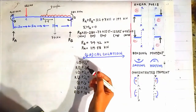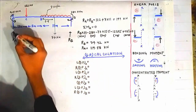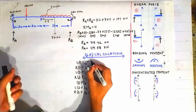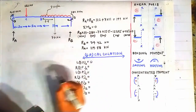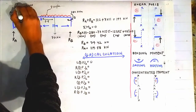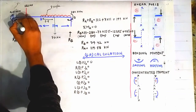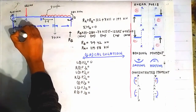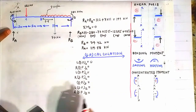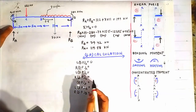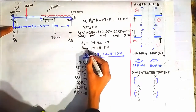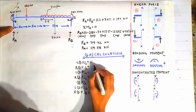Shear force on the left side of point A is zero because the beam terminates there. For the shear force on the right side of point A, we construct a section XX very near to point A on its right side. On the left side of this section, the reaction RA contributes to a positive shear force.